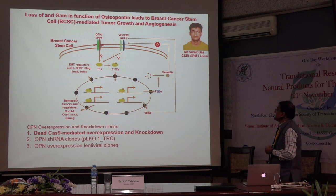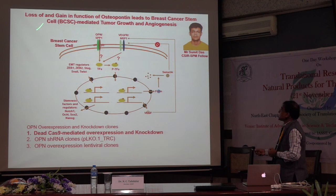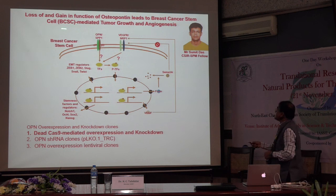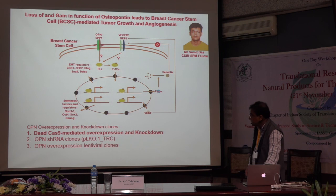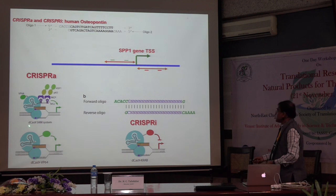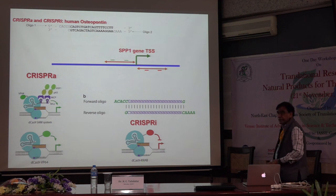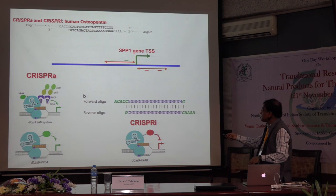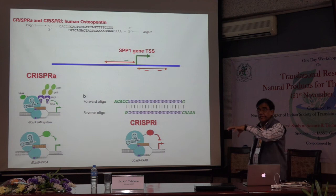He has made a construct — basically the idea is to study gain and loss of function of osteopontin: how that controls breast cancer stem cell-mediated tumor growth, metastasis, and angiogenesis. What he is doing: he has made multiple clones. One is by activating osteopontin — he is using dCas9-SAM system or dCas9-VP64 model. And for silencing osteopontin gene he is using dCas9-KRAB model. The idea here is he is now using either activated or silencing of these genes using CRISPR-Cas9.